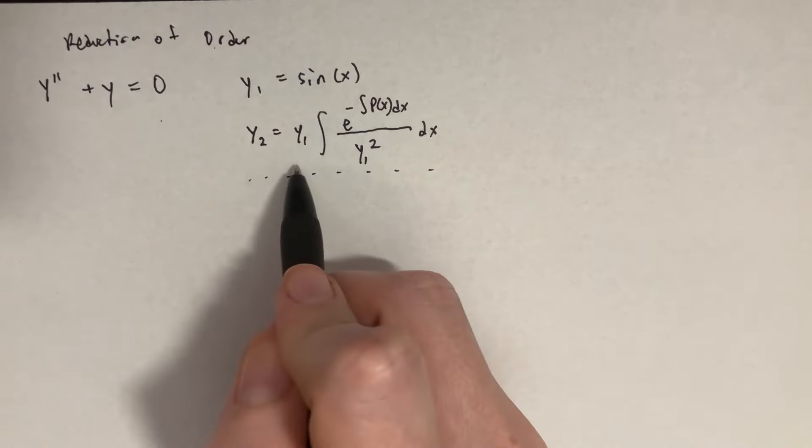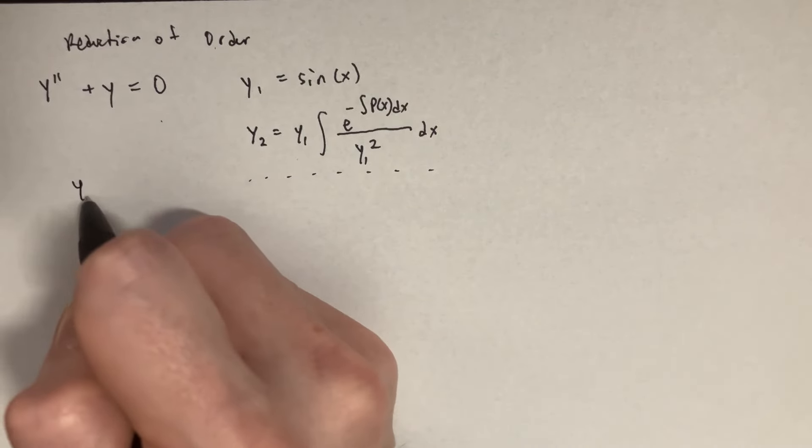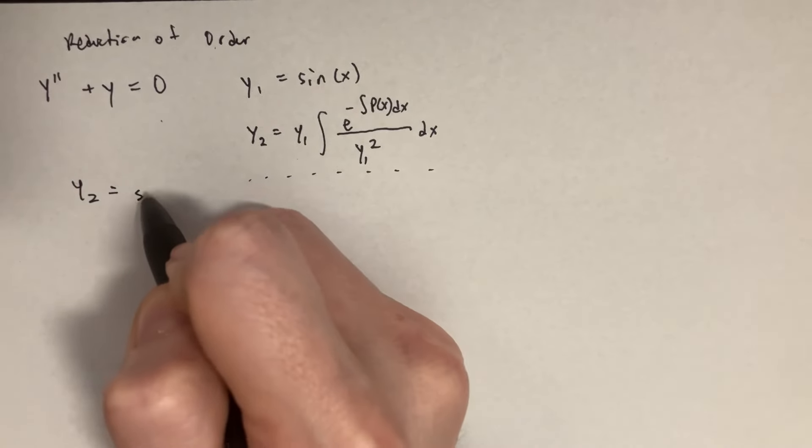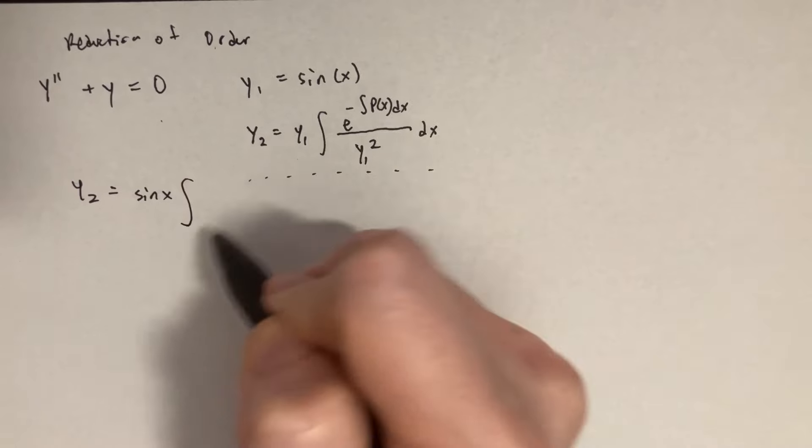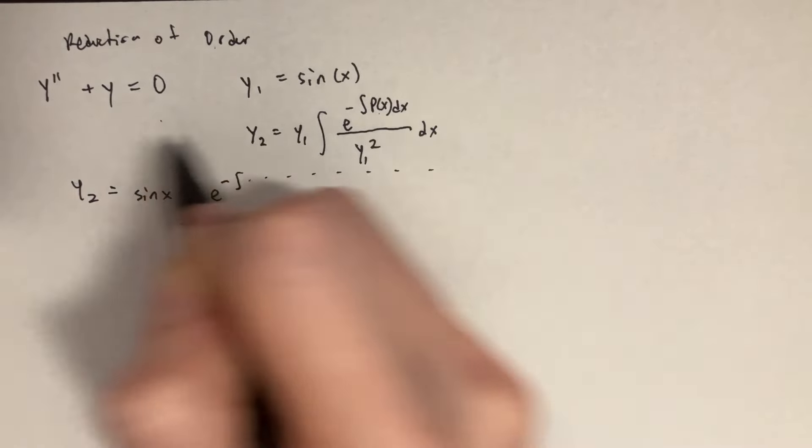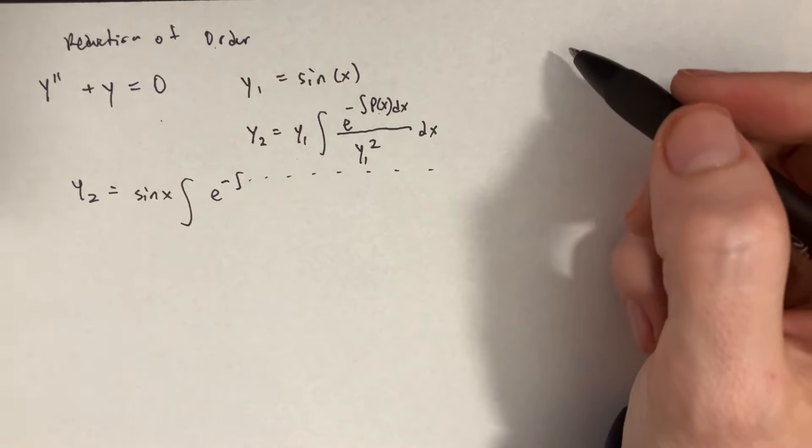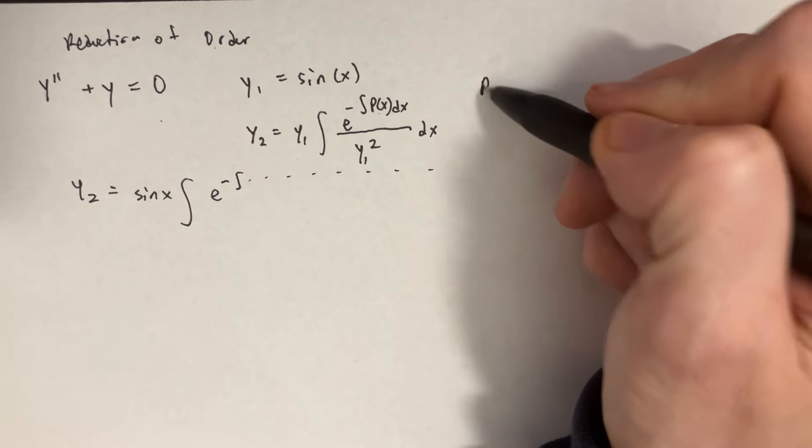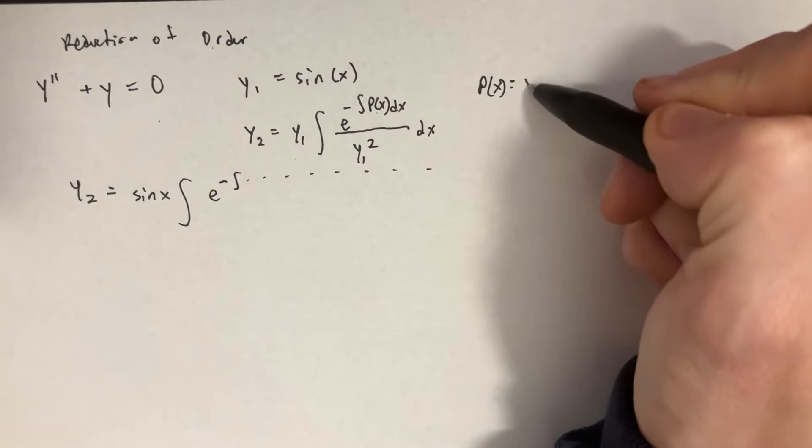So all we need to do is just plug this in. Y2 equals the sine of x integral e to the negative, well p of x. In this case, p of x refers to the first derivative.